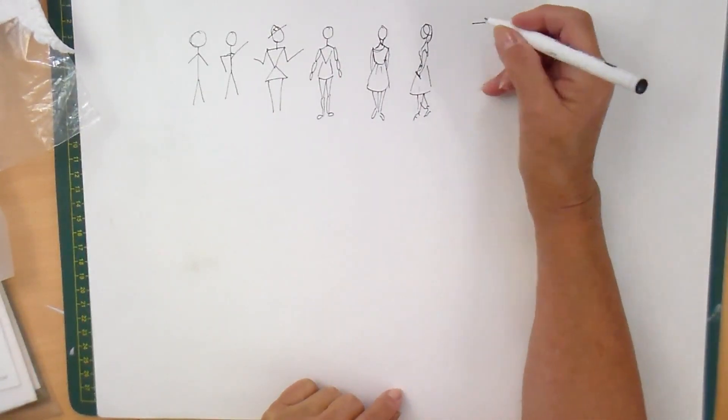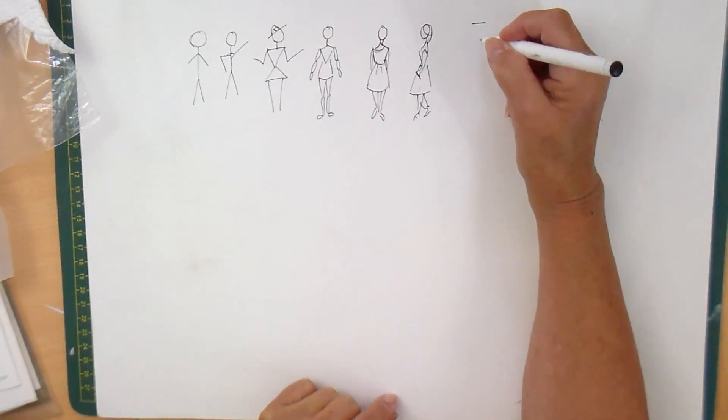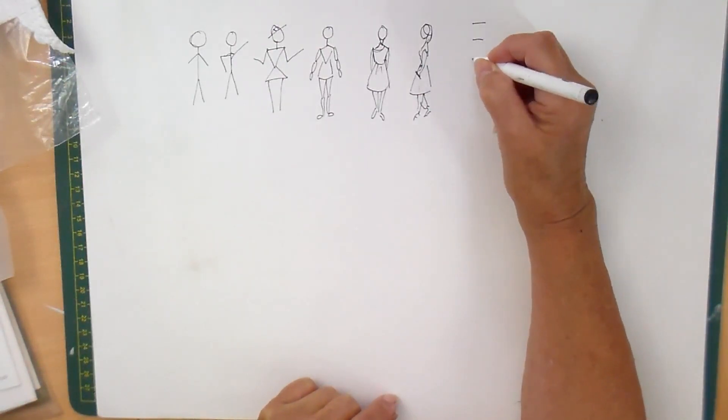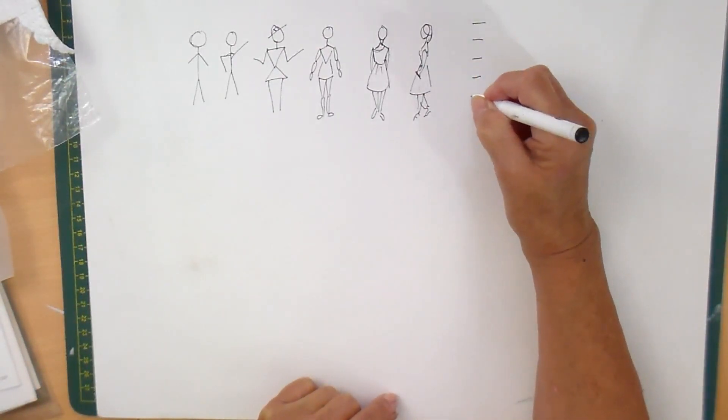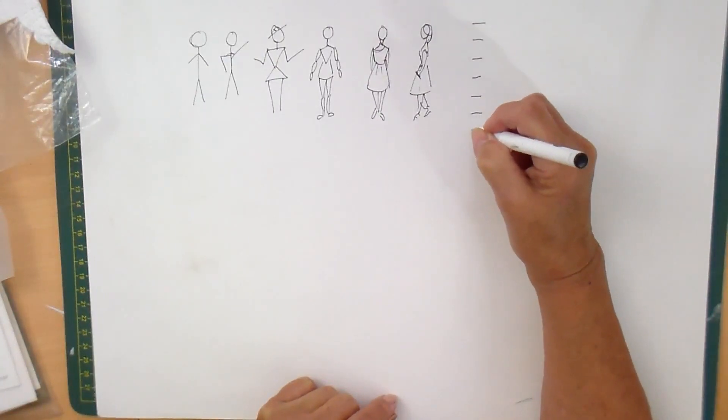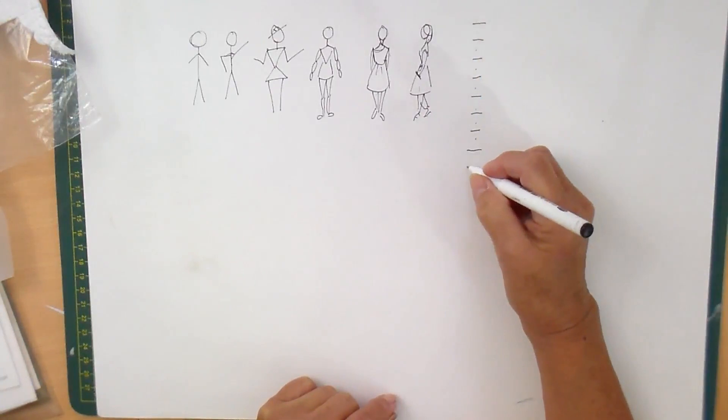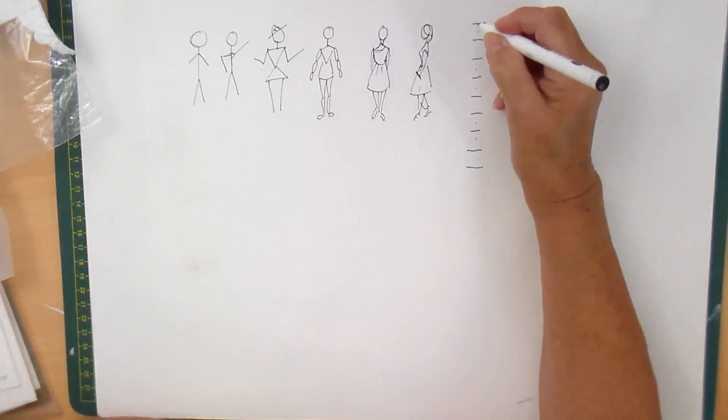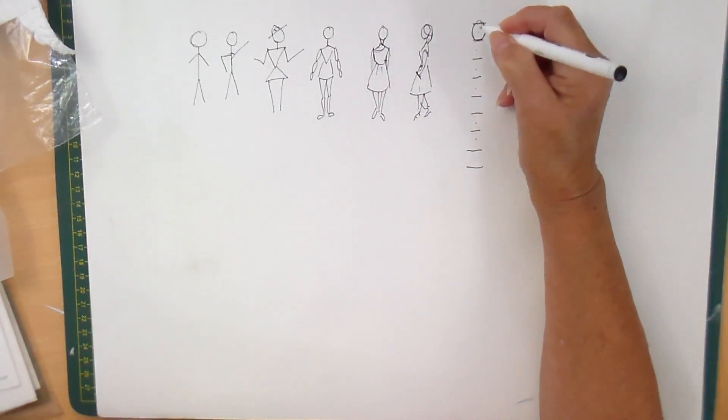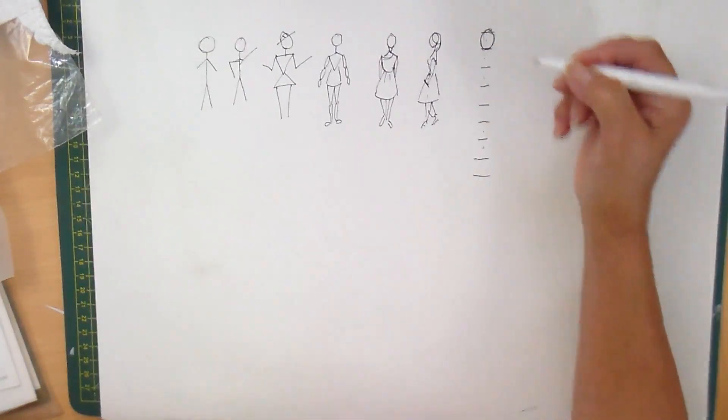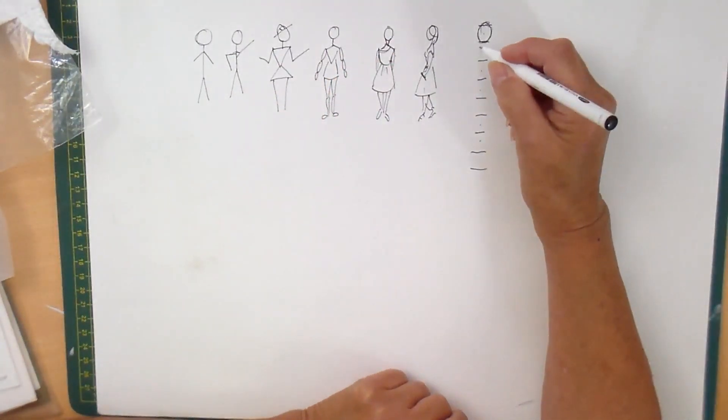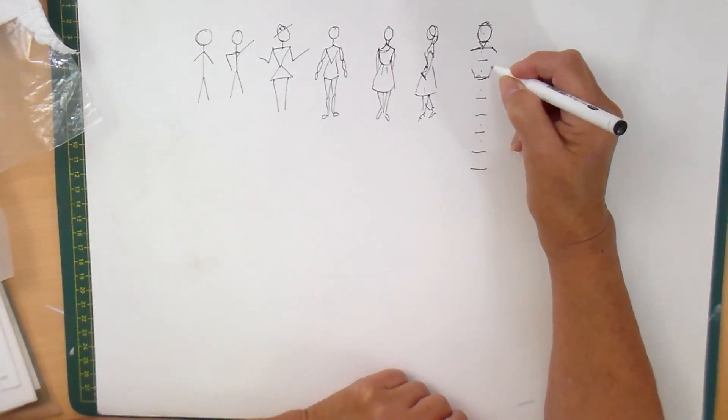Most bodies when you're measuring have eight. One, two, three, five, six... one, two, three, four, five, six, seven, eight. And that is the head. Usually if you measure eight heads that will give you the rough outline, the rough proportion of the body.